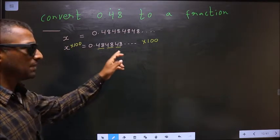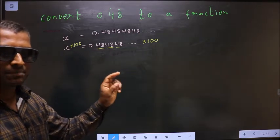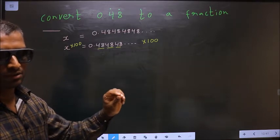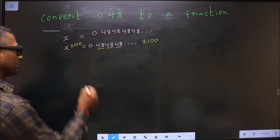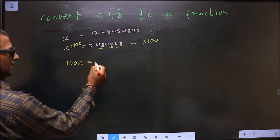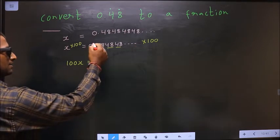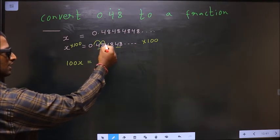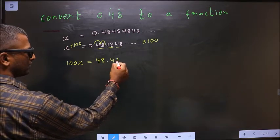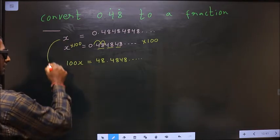Whenever two numbers are being repeated, we should multiply by 100. Had it been three numbers, we should multiply by 1000. It is a rule. Next, x times 100 is 100x, and when you multiply this by 100, the decimal will shift two places to the right, making it 48.4848...